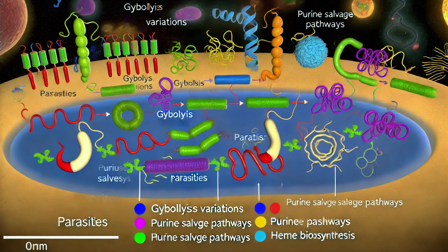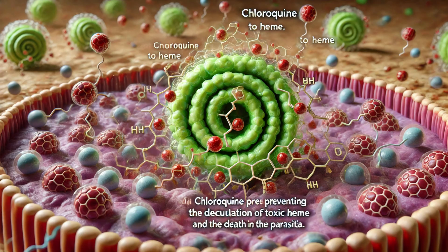Antiparasitic drugs often target metabolic pathways unique to the parasite or more crucial to the parasite's survival than to the host. Some antimalarial drugs inhibit the parasite's ability to digest hemoglobin, a process vital to its survival within red blood cells. Quinolines, such as chloroquine, interfere with the malarial parasite's ability to detoxify heme, a byproduct of hemoglobin digestion. In the parasite's digestive vacuole, chloroquine binds to heme, preventing its detoxification into hemozoin. The accumulation of toxic heme kills the parasite, while the human host remains unaffected.